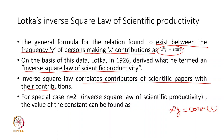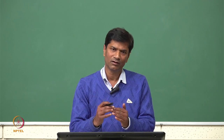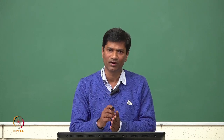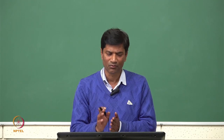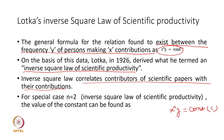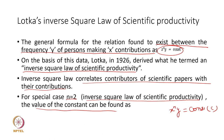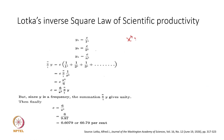The inverse square law correlates contributors of scientific papers with their contributions. The relationship between the number of papers produced by a contributor is governed by x^n · y = C. For the special case where n = 2 (the inverse square law of scientific productivity), the value of the constant can be found as follows: y₁ = C/1², y₂ = C/2², y₃ = C/3², and so on.